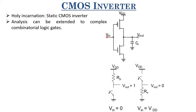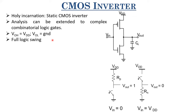When Vin equals one, Vgs equals Vdd, which is greater than Vth_N. So the NMOS is connected by small resistance R_n. Vsg is Vdd minus Vdd, which is zero — smaller than |Vth_P| — so the PMOS is in cutoff and doesn't source any current. Whatever charge was on the load capacitor gets drained to ground through small resistance R_n. So Voh equals Vdd and Vol equals ground, giving us a full logic swing and high noise margin.